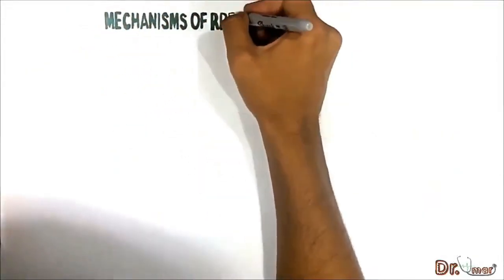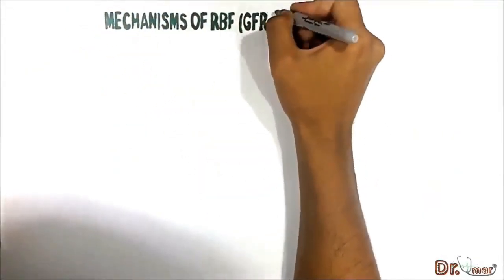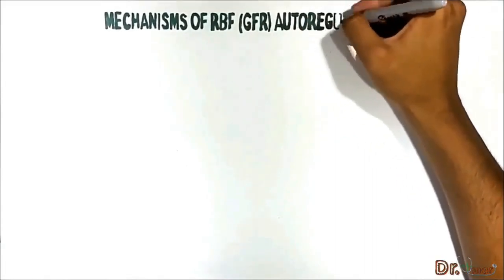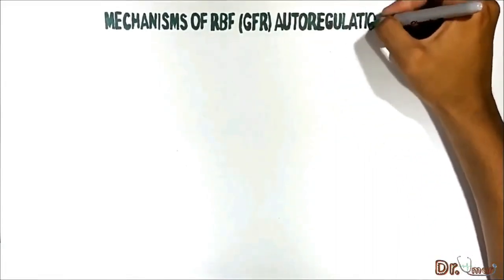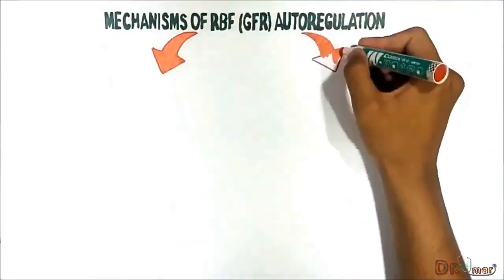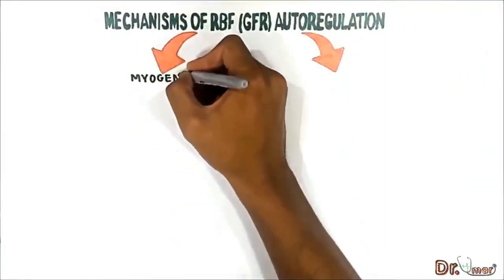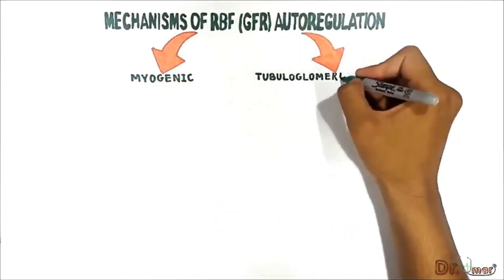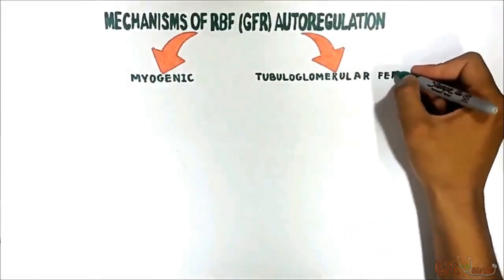It is very important to know that there are two mechanisms which contribute to renal autoregulation: the myogenic mechanism and the tubuloglomerular feedback mechanism.